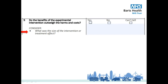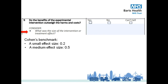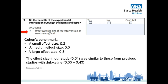The first point we're asked to consider is the size of the treatment effect. The effect size will tell us whether the treatment being tested made a meaningful difference between the intervention and control groups. Effect size is usually interpreted according to Cohen's benchmarks, which suggest that 0.2 represents a small effect size, 0.5 a medium effect size, and 0.8 a large effect size. In the discussion section on page 816, the authors report an effect size of 0.51, which is similar to what other studies found. Based on Cohen's guideline, this is a medium effect size.